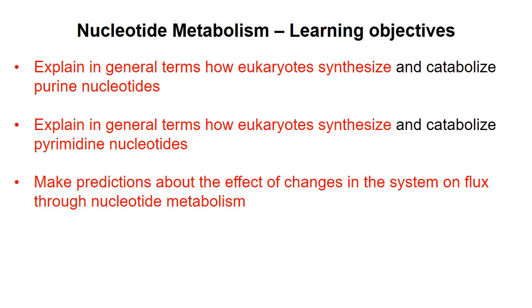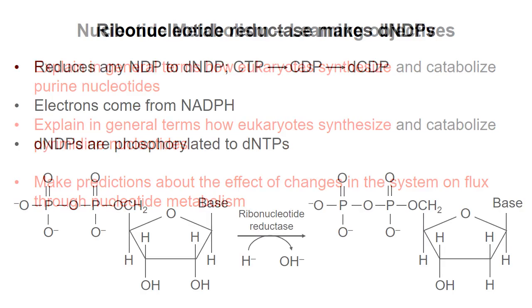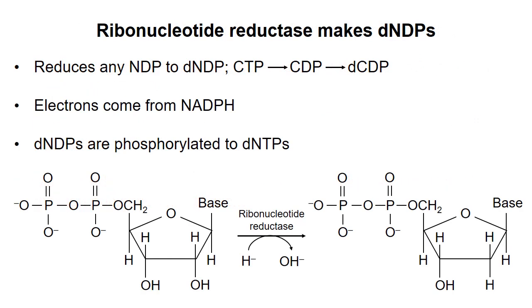In this video I'll describe how purine and pyrimidine deoxynucleotides are derived from ribonucleotides, and I'll talk about regulation of this process. The enzyme ribonucleotide reductase is responsible for reducing ribonucleotides to deoxyribonucleotides by removing the oxygen on the 2' carbon of the sugar.